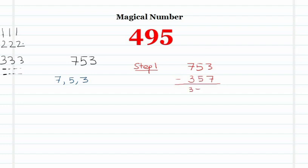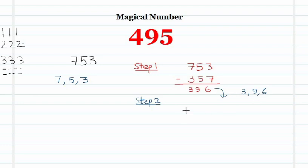The answer is 396. Now proceed to Step 2. Taking the number obtained in Step 1, which is 396, the digits are 3, 9, and 6. Form the largest number: 963. Form the smallest number: 369. Find their difference: 594.